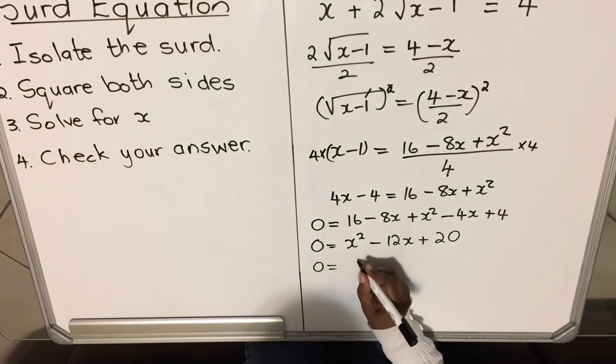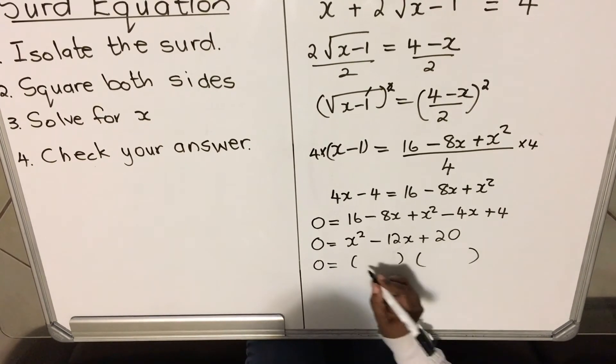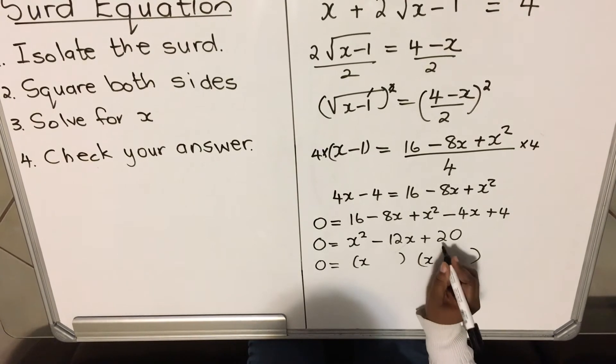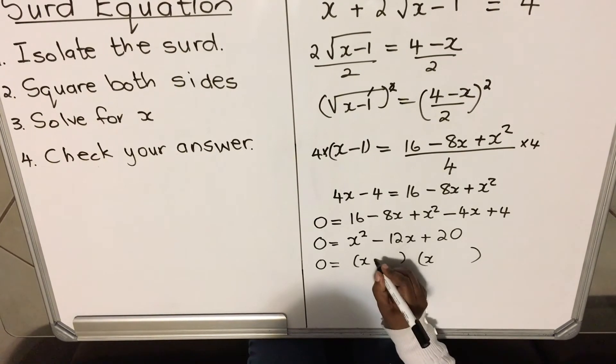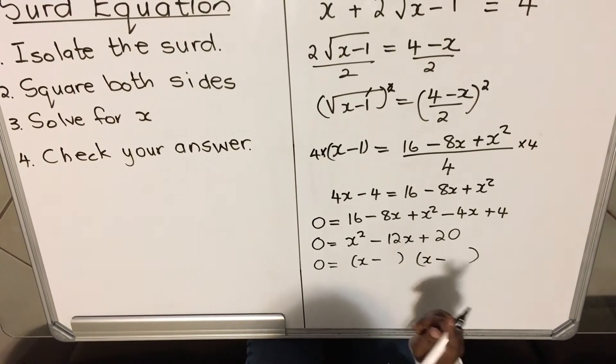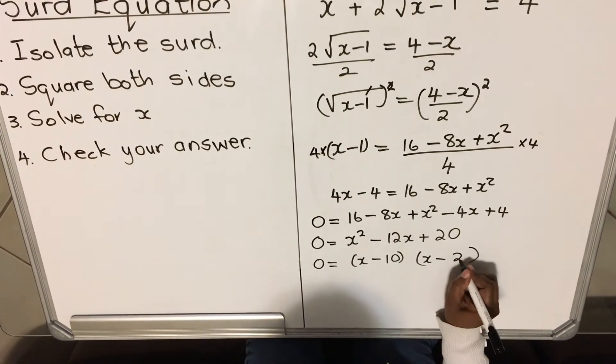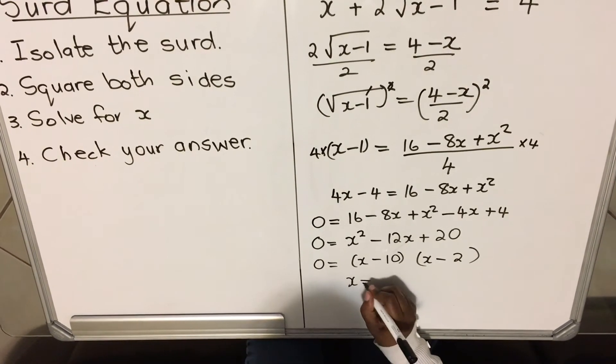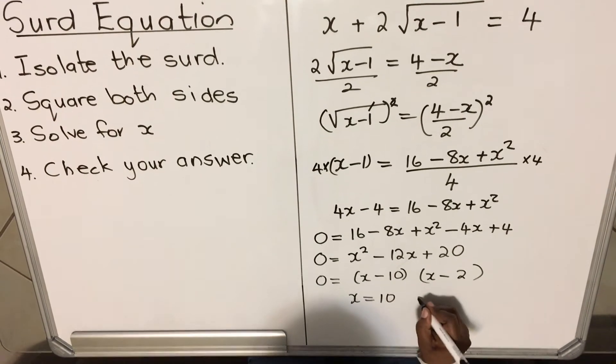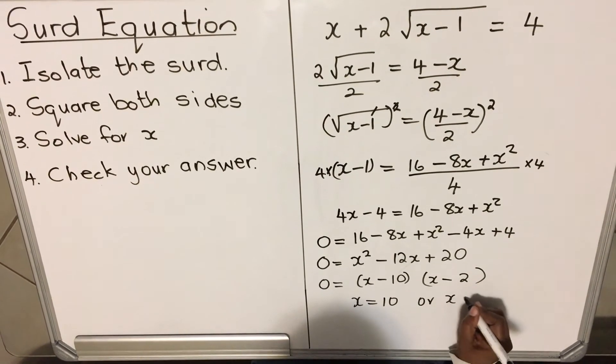Zero equals my factors, x times x. Because this is positive and negative, they'll both be negative. You can always use the quadratic formula. Then it's 10 and 2, so my x values: x = 10 or x = 2.